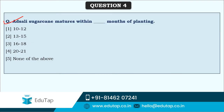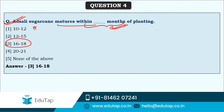Next question: adsali sugarcane matures within dash months of planting. The correct answer is 16 to 18 months. This is the off-season sugarcane planting which takes more time, hence it is 16 to 18 months. In general, whenever sugarcane is planted seasonally — called suru in Maharashtra and exali in a few other states — it is only 12 to 14 months. But since adsali is off-season, it takes 16 to 18 months to get the matured cane for harvesting.